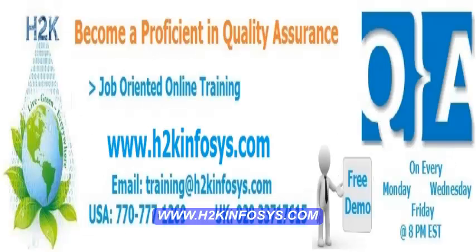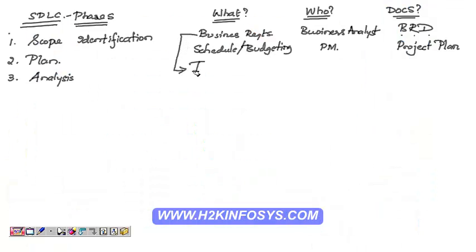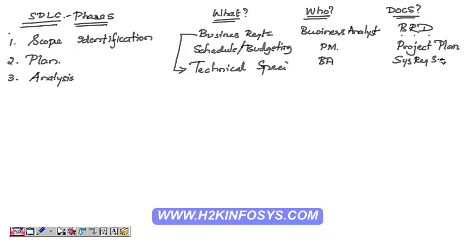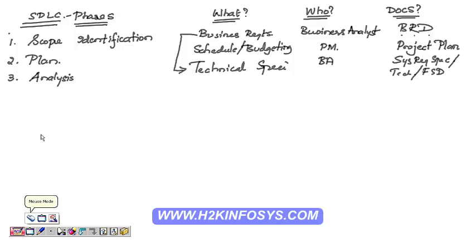What we do here is convert business requirements into technical specifications — and this is done by the business analyst. The document he prepares is called the System Requirements Specification or Technical Specification Document, also known as the Functional Specification Document. SRS, FSD — all are one and the same.